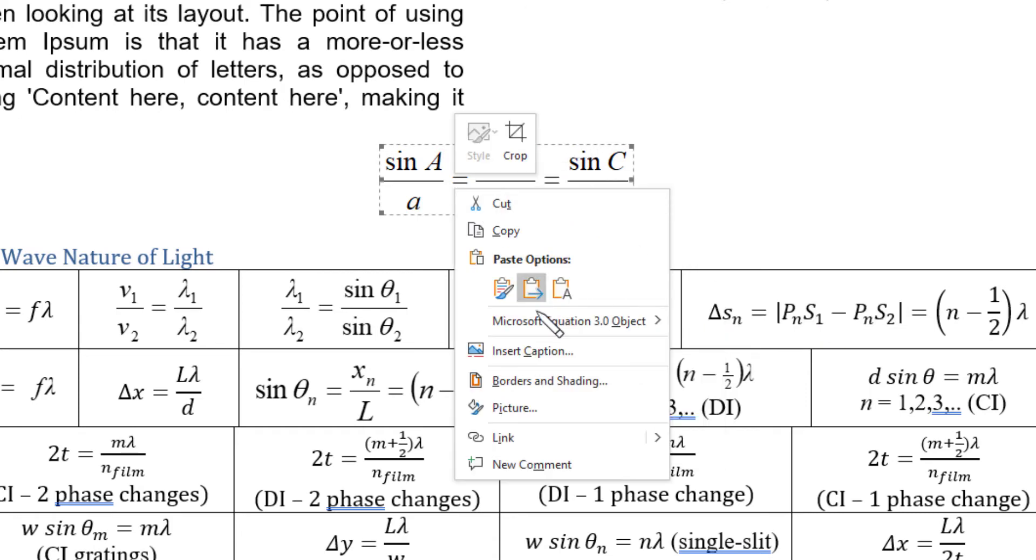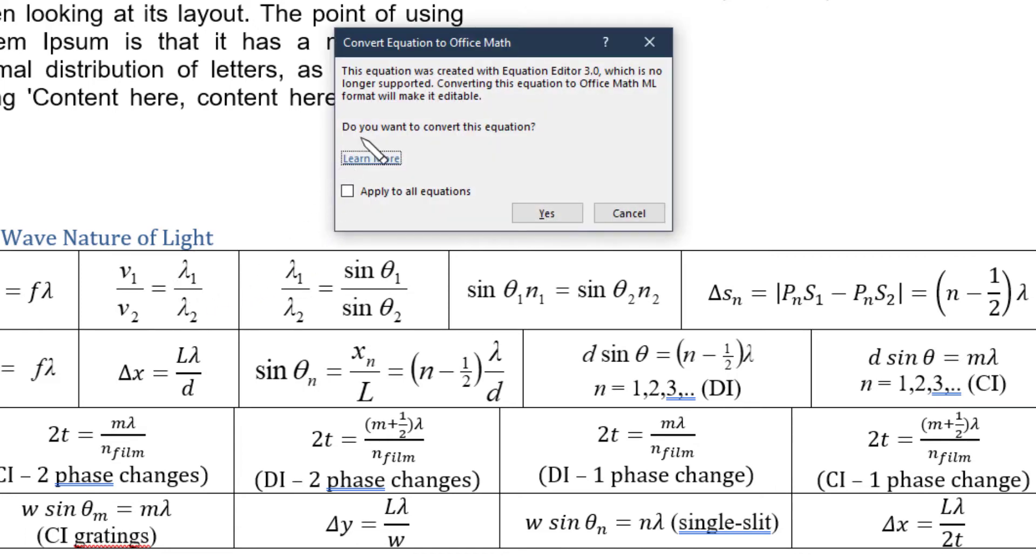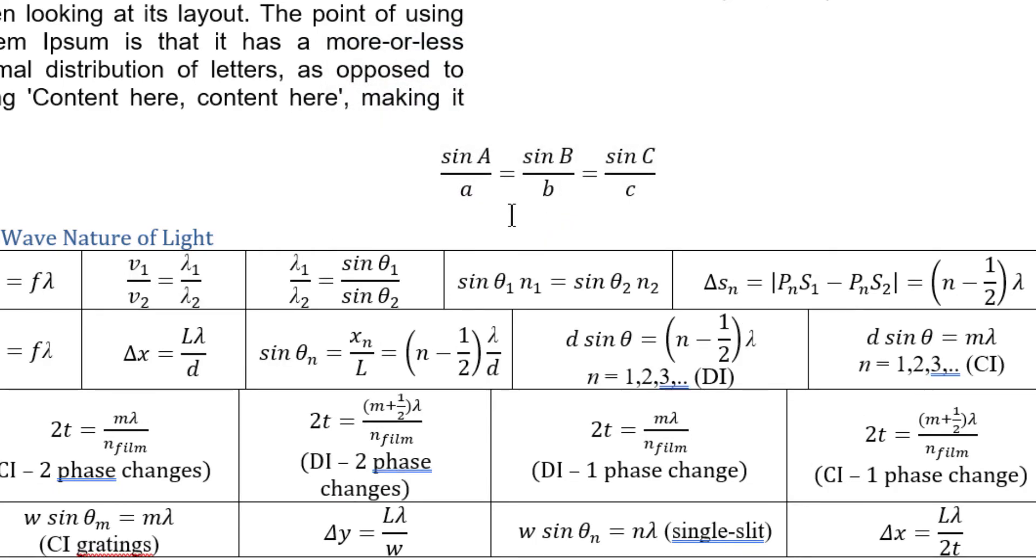I can right click on each one of these and say convert to office math. And it did. It converted it to a fully functional equation, but it didn't do it to the other ones. I'll have to go through and convert all of these. What if I double click on it? I got this new box. This equation was created with equation editor three, which is no longer supported. Converting it will make it editable. Do you want to convert this equation? Apply to all equations. Yes. I want to apply that to all my equations. And it seems to have converted them all. Fantastic.